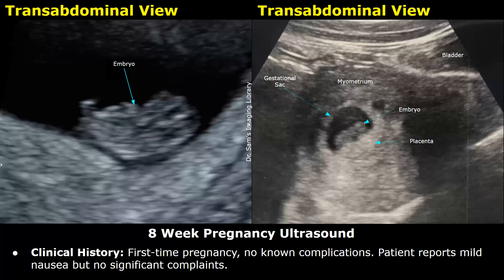These are transabdominal images. We can see the gestational sac and the embryo within the sac. This is the myometrium of the uterus, and over here is the bladder. This is in the longitudinal plane.